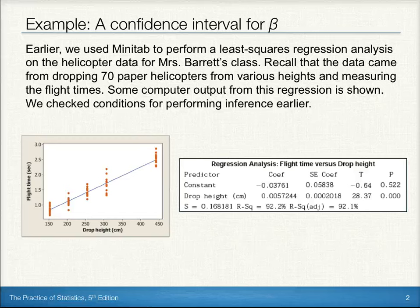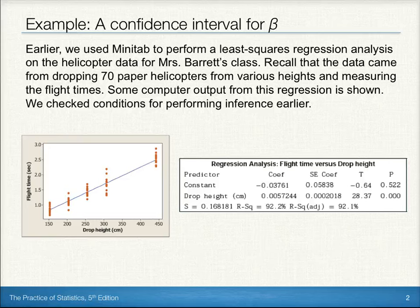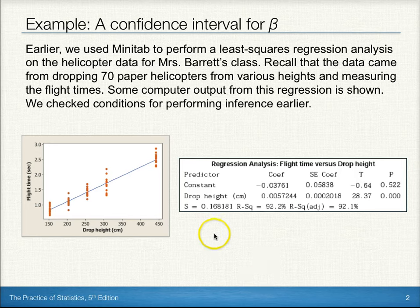Earlier, we used Minitab to perform a least squares regression analysis on the helicopter data for Mrs. Barrett's class. Recall that the data came from dropping 70 paper helicopters from various heights and measuring the flight times. Some computer output from this regression is shown below.